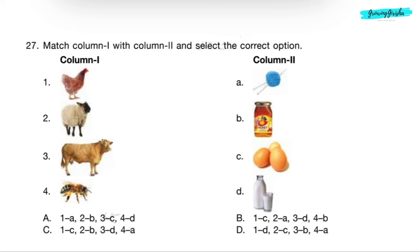Question 27: Match column 1 with column 2 and select the correct option. Hen gives us egg, sheep gives us wool, cow gives us milk, and honeybee gives us honey. So correct answer will be option B.